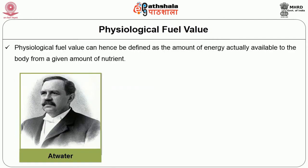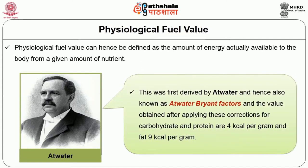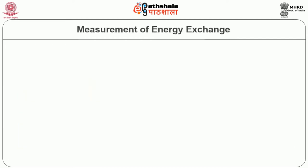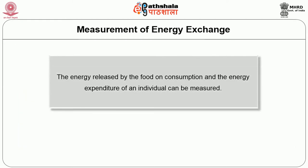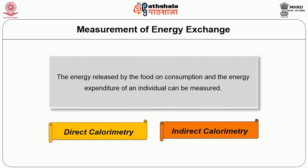Physiological fuel value is defined as the amount of energy actually available to the body from a given amount of nutrient. This was first derived by Atwater, and hence also known as Atwater-Bryant factors. The values after applying these corrections are: carbohydrate 4 kilocalories per gram, protein 4 kilocalories per gram, and fat 9 kilocalories per gram. The energy released by food on consumption and the energy expenditure of an individual can be measured by direct and indirect calorimetry.